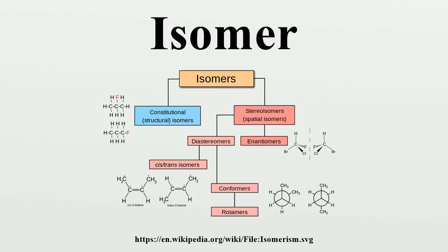Isomerization is the process by which one molecule is transformed into another molecule that has exactly the same atoms, but the atoms are rearranged. In some molecules and under some conditions, isomerization occurs spontaneously. Many isomers are equal or roughly equal in bond energy, and so exist in roughly equal amounts, provided that they can interconvert relatively freely — that is, the energy barrier between the two isomers is not too high. When isomerization occurs intramolecularly, it is considered a rearrangement reaction.